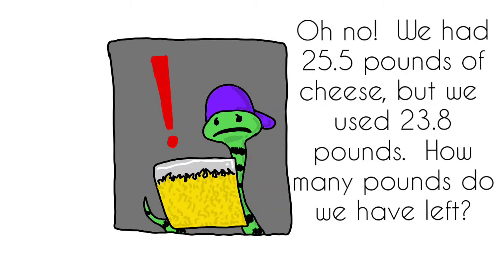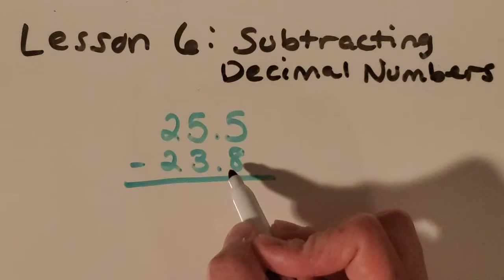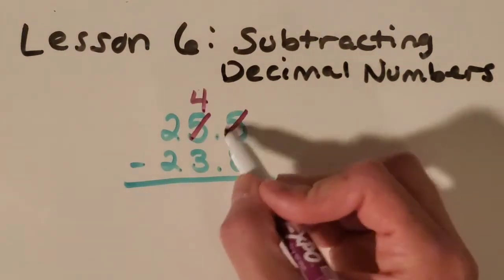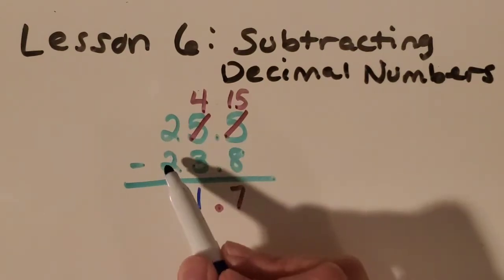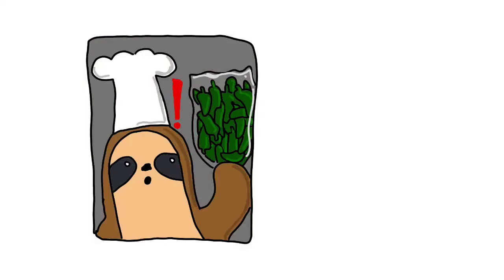Henry, oh no! We had 25.5 pounds of cheese but we used 23.8 pounds. How many pounds do we have left? Can you pause the video and help us figure this out? Thanks for the help everyone. Since we only have 1.7 pounds of cheese left, we better order more.